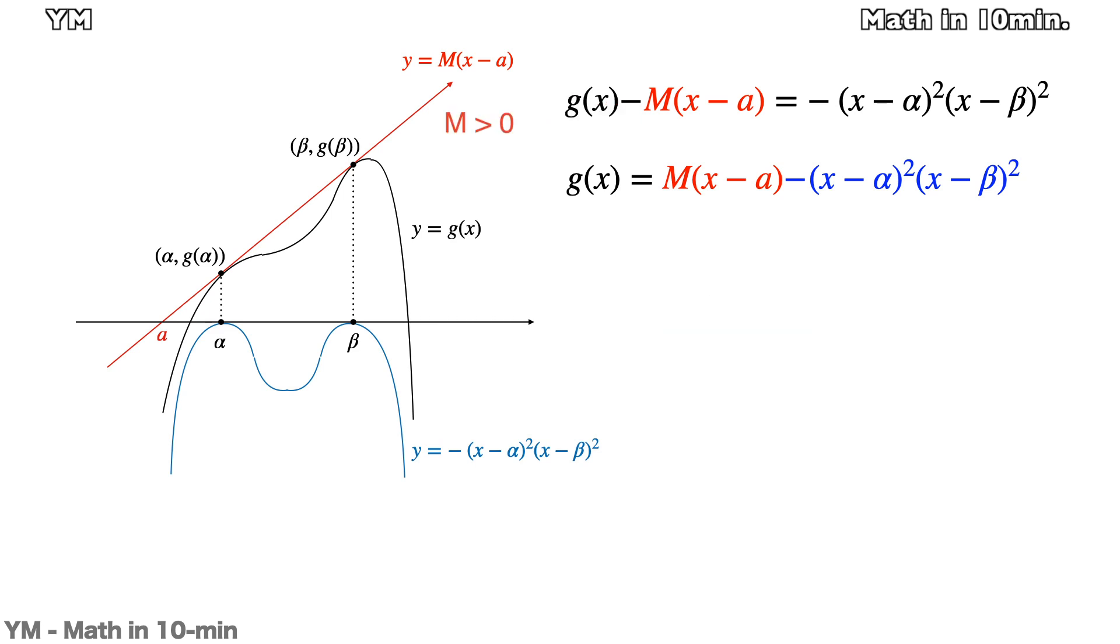But as the slope M of the red line is positive, M must be sufficiently large so that all the slopes of this interval of the blue graph become positive. So by finding the slope of the inflection point which has the least slope, we can find the minimum value of M.